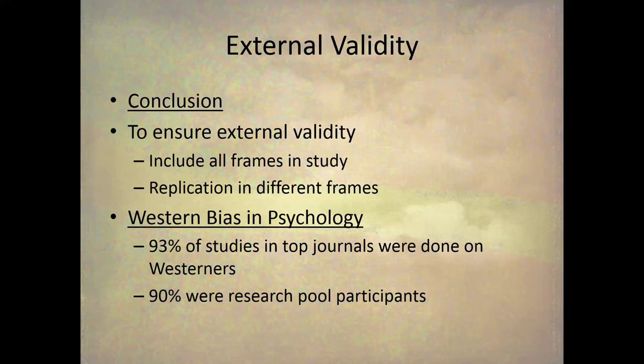To conclude on external validity: to ensure good external validity, include all the frames you want to generalize to in your study. If you don't have them in your study, it will be difficult to generalize to those frames. Also, replications help — if you can replicate the study in different frames across different studies, you build up the external validity of an area of research. Looking at a literature review or meta-analysis, you can see if a study was replicated across different frames and call that phenomenon externally valid.